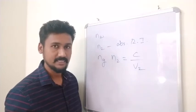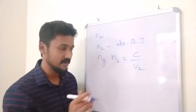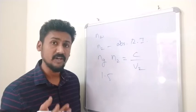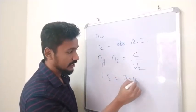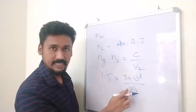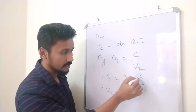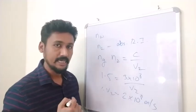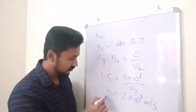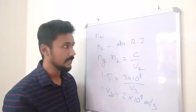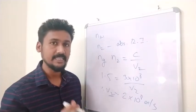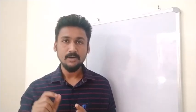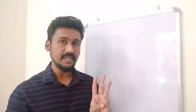This type of question is asked in exams: if the absolute refractive index of glass is 1.5, find the velocity of light in glass. We write 1.5 = (3×10⁸) / v2, so v2 = 3×10⁸ / 1.5 = 2×10⁸ m/s. So in glass, the velocity of light is 2×10⁸ m/s.